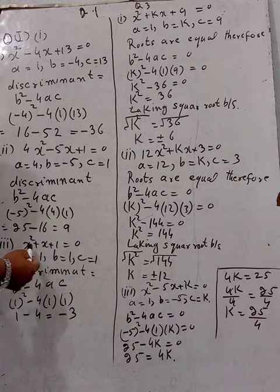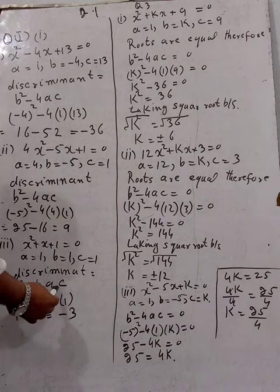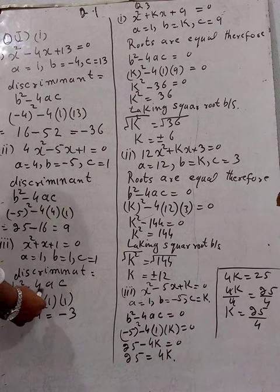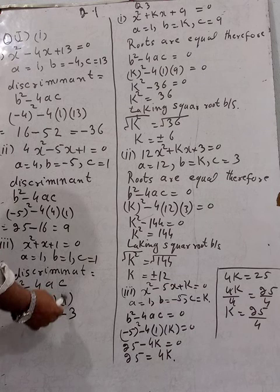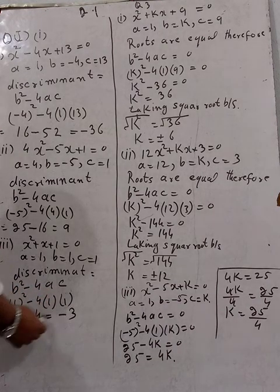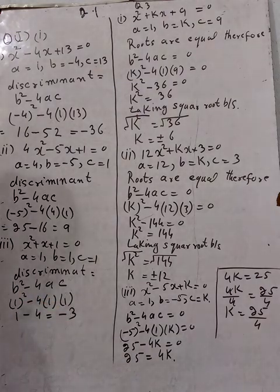Question 4: x squared plus x plus 1 is equal to zero. The discriminant equals b squared minus 4ac. Here b equals 1, so 1 squared equals 1, minus 4 times 1 times 1 equals minus 4. The discriminant equals 1 minus 4, which is minus 3.